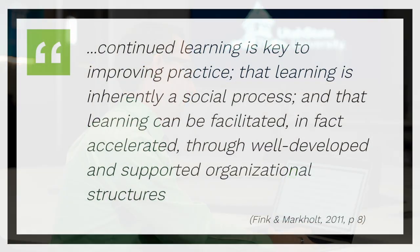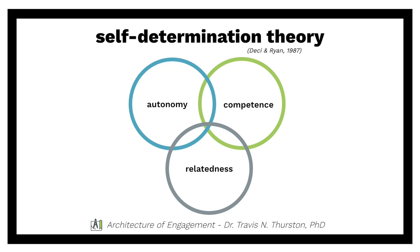So we want to create an architecture of engagement that provides for a social process in learning and that is well-developed and has a supportive structure. We start with self-determination theory as our theoretical background. Deci and Ryan teach us about autonomy, competence, and relatedness, and the importance of these three elements for learning — specifically the motivation to learn.